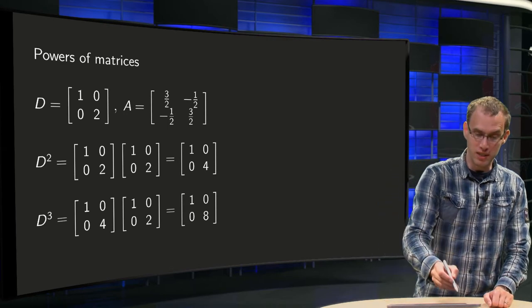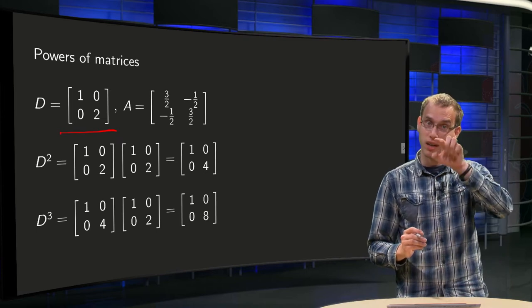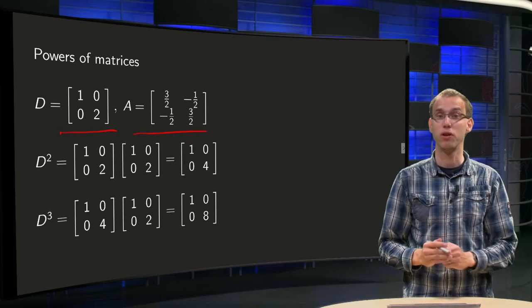Let us start with two examples, with matrix D, a diagonal matrix, which means that we have only numbers on the diagonal zeros otherwise, and some matrix A, which is a lot of rubbish.